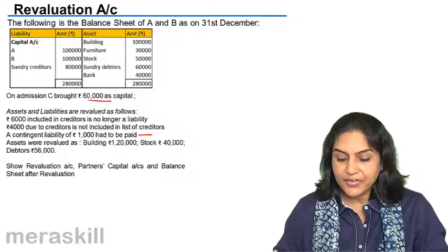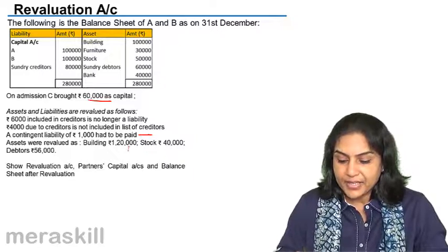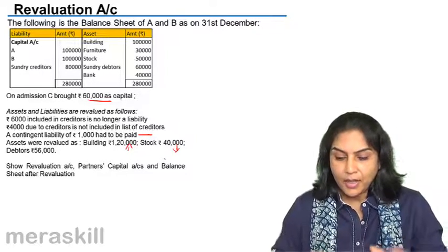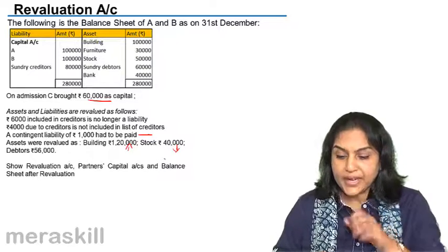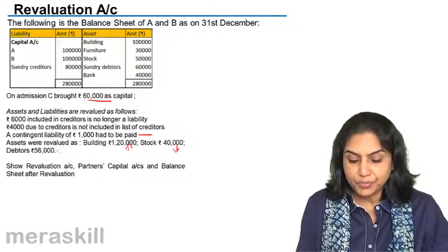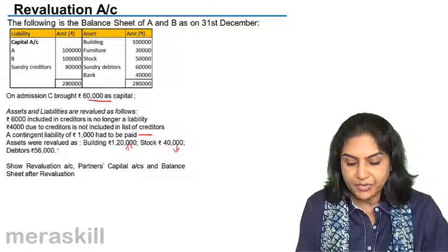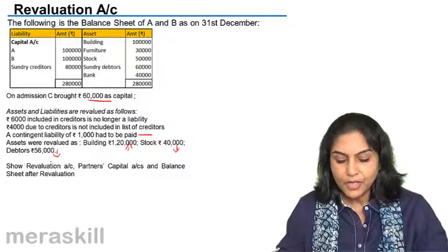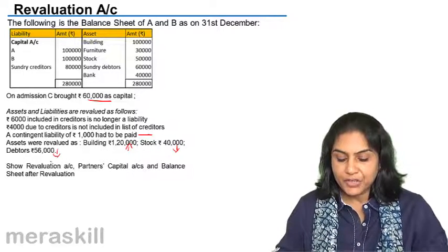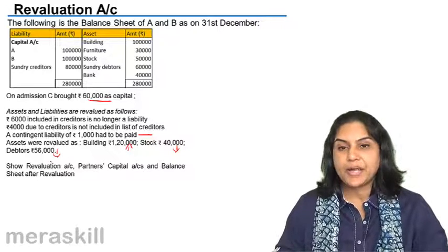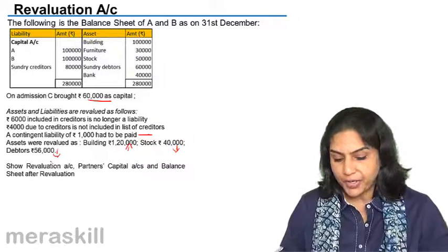Assets are then revalued. Building has increased. Stock has decreased. Debtors has come down — this is assumed to be a provision for doubtful debts, so we will create a provision account. Show revaluation account, partner's capital accounts, and balance sheet after revaluation.